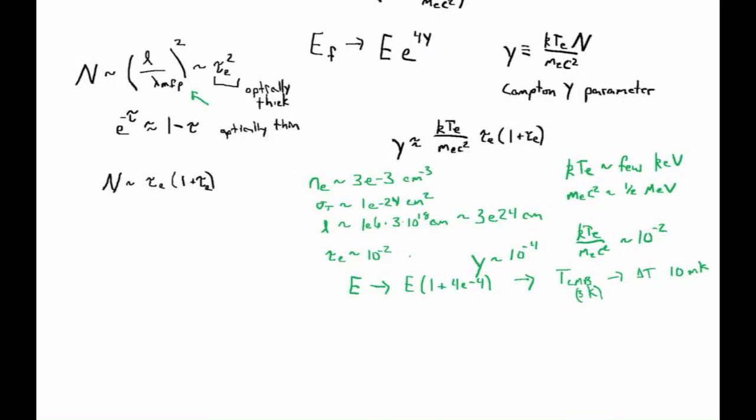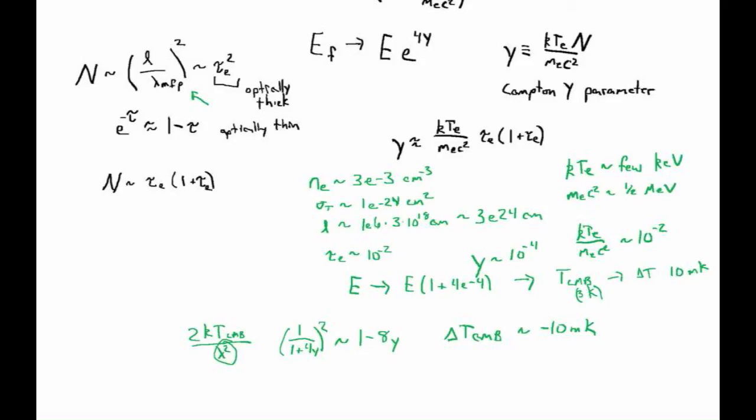Where did I get 10 millikelvin from? You'd think that 4 times 10 to the minus 4 times something like 3 Kelvin ends up with 10 to the minus 3, so 1 millikelvin. But if we look at a blackbody spectrum in the Rayleigh-Jeans tail, the flux is given by 2kT_CMB over lambda squared. The problem is we picked up another two factors of lambda, which means we get a factor of 1 over (1 plus 4y) squared. To first order this becomes 1 minus 8y for small y. So this actually says that on the Rayleigh-Jeans tail, the change in the temperature of the CMB is actually of order minus 10 millikelvin. This might surprise you because you were thinking that we should have been injecting energy into the photons from these electrons. So why aren't we raising the temperature of the CMB? Well, in fact, we are. But because this is a scattering process, we're taking photons that are low energy and we're turning them into higher energy photons.